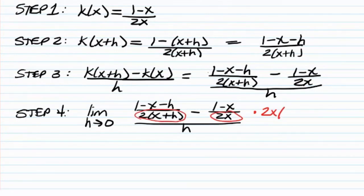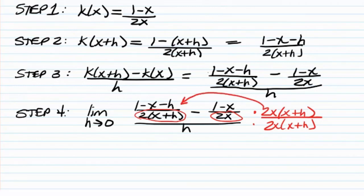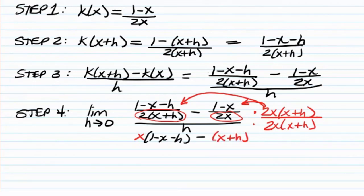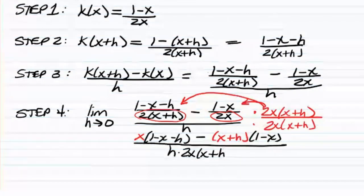The least common denominator of these two fractions is 2x times x plus h, and I have to multiply that in the top and the bottom — so I'm really just multiplying by 1. When I multiply it times the first term, the 2 and the x plus h cancel, leaving an x behind. So we're going to have x times 1 minus x minus h, and then minus. When I multiply it to the second term, the 2 and the x cancel, leaving an x plus h behind. So we will have x plus h times 1 minus x.